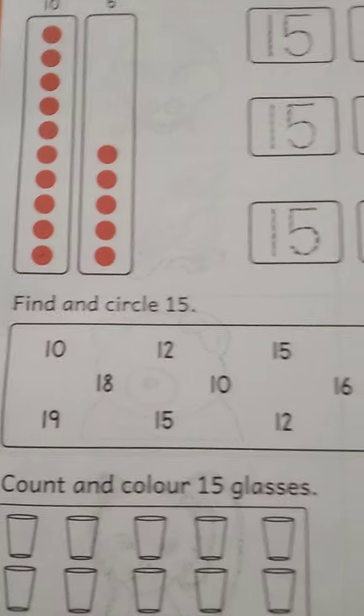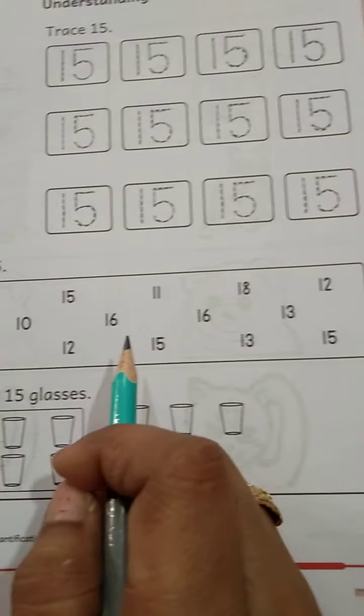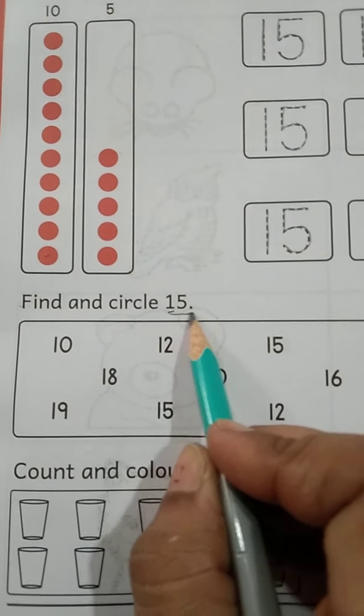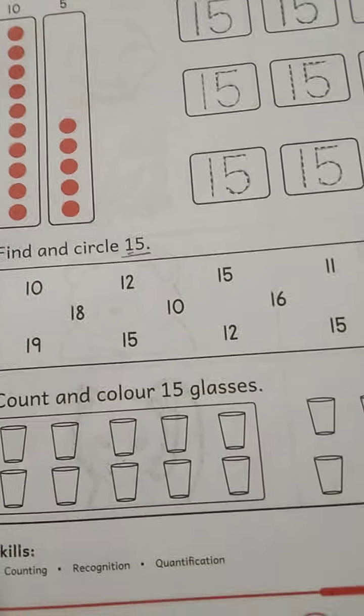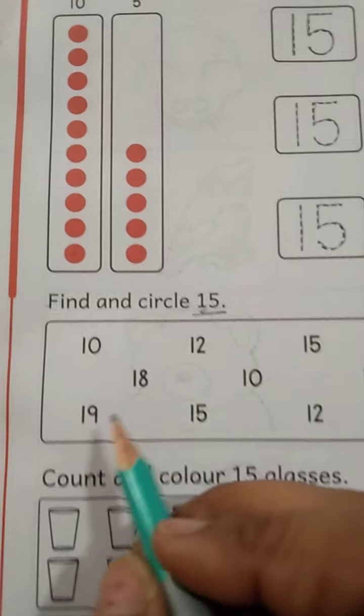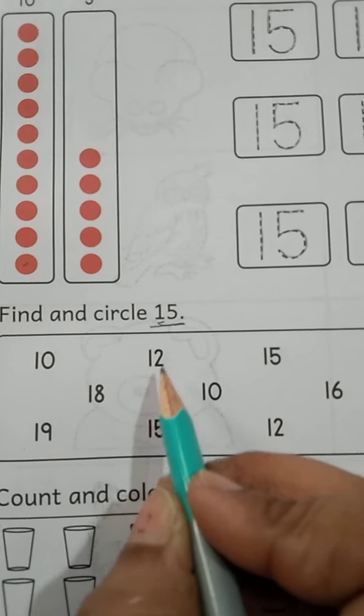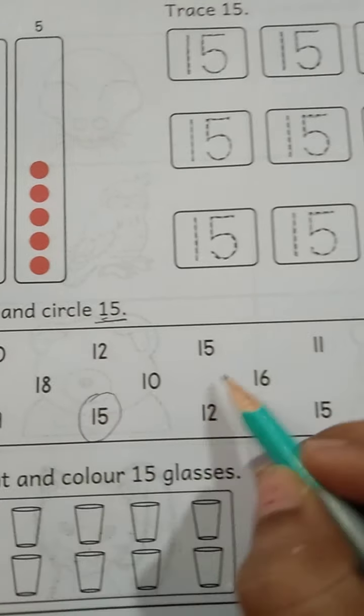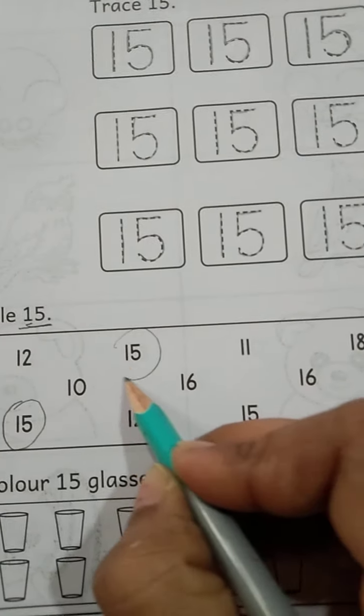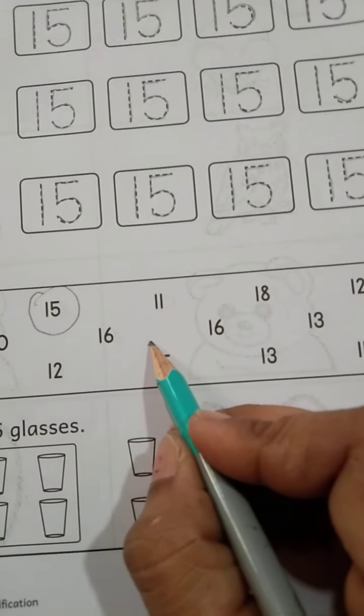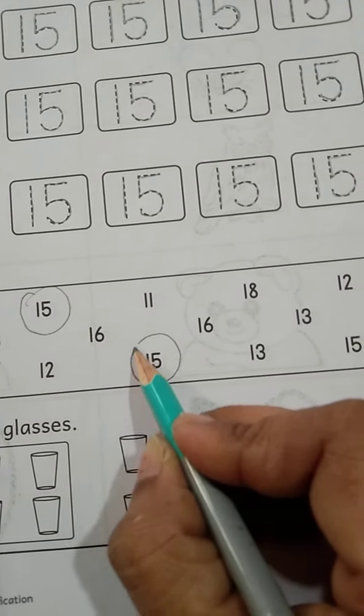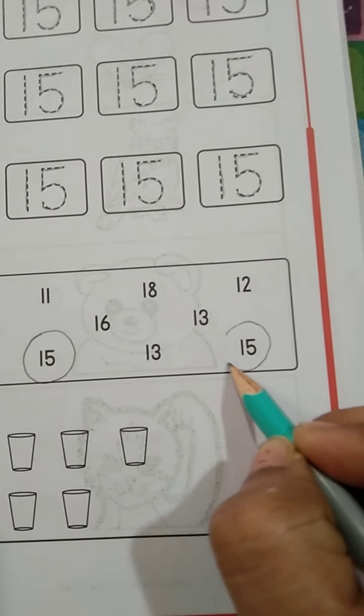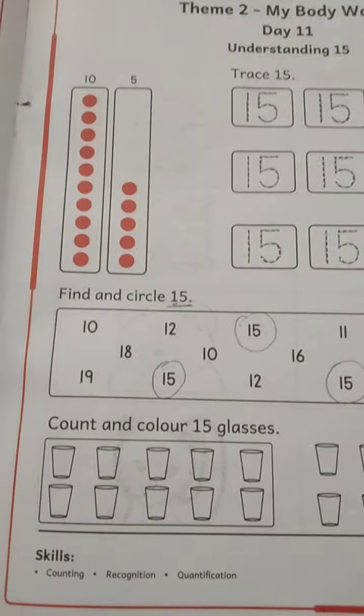Now let's come to find and circle 15. Here we have different numbers. We have to find number 15 in these numbers and circle it. So let's start. This is 15, let's circle this. Again, here is 15. I have found one more, and this is the last. Done.